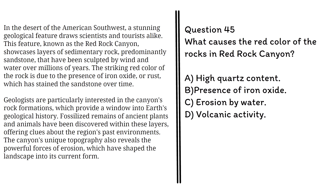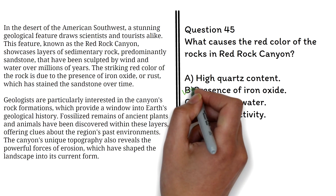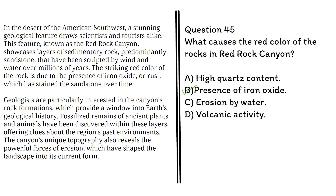Question 45. What causes the red color of the rocks in Red Rock Canyon? The correct answer is B, the presence of iron oxide. From the passage, we know that the striking red color of the rock is due to the presence of iron oxide, or rust, which has stained the sandstone over time.